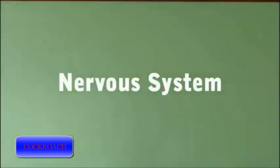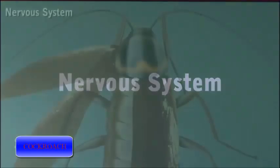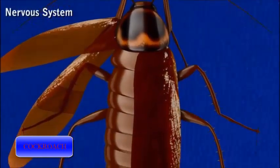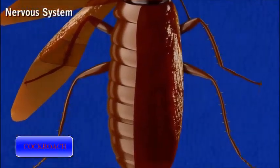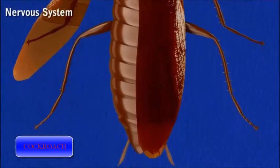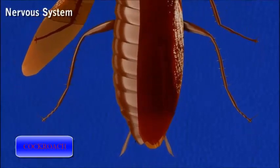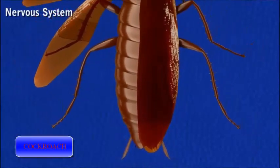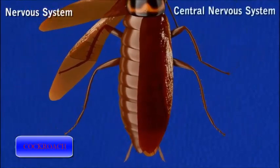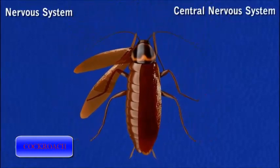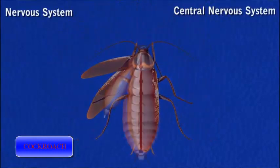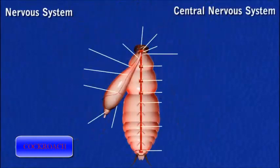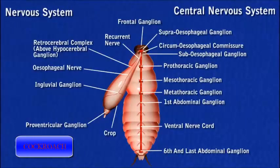Nervous system. The nervous system comprises the central, peripheral and sympathetic nervous system. The central nervous system consists of the brain and ventral nerve cord with its ganglia.